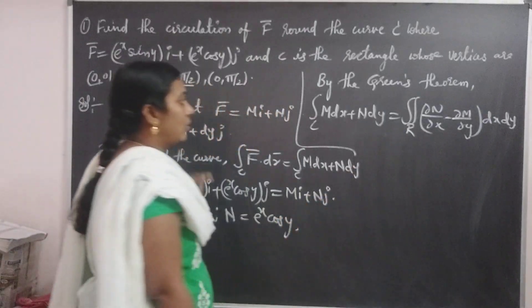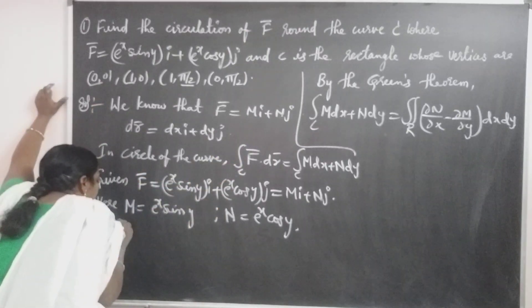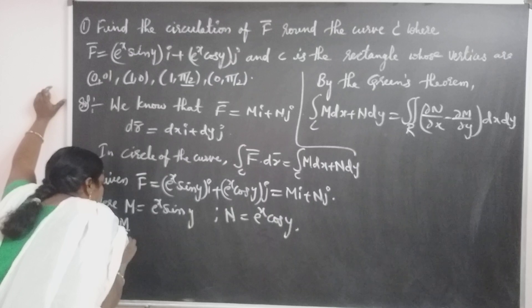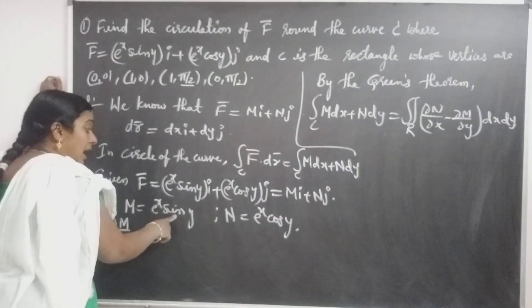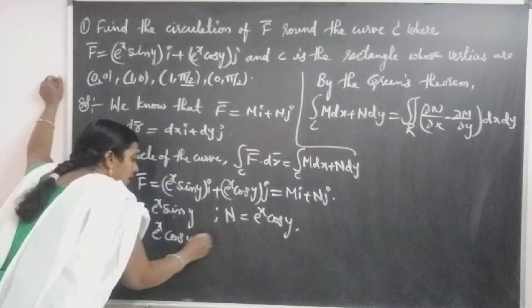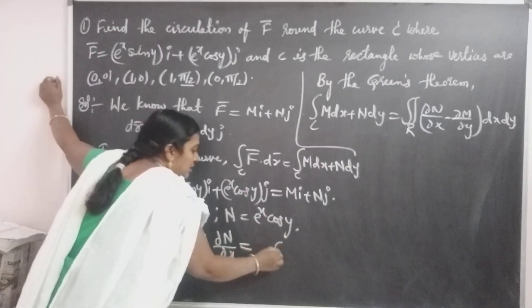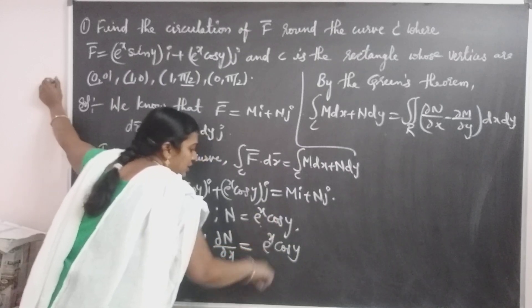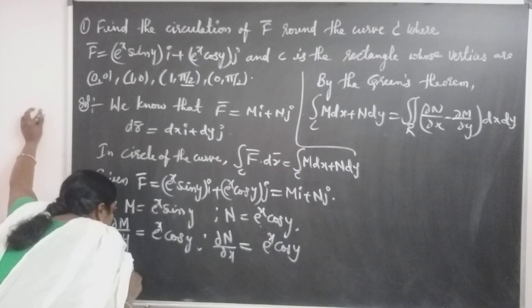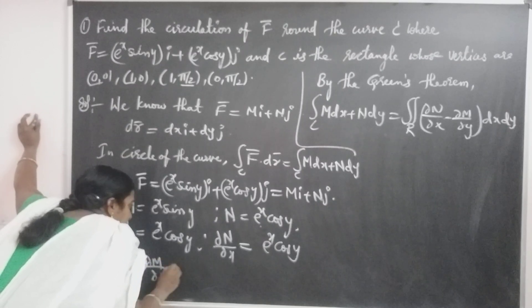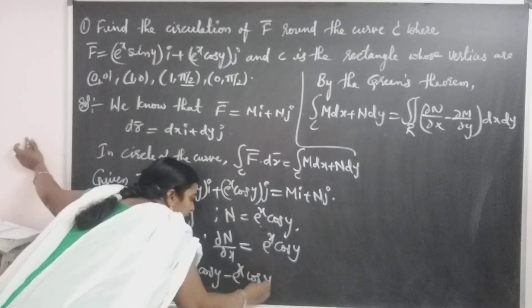In this case, we want ∂N/∂x minus ∂M/∂y. For that purpose, we differentiate M with respect to y: treating e to the power x as constant, the differentiation of sin y is cos y. In the same way, N is differentiated with respect to x: here cos y is constant, and the differentiation of e to the power x is e to the power x. So ∂N/∂x minus ∂M/∂y equals e to the power x cos y minus e to the power x cos y.